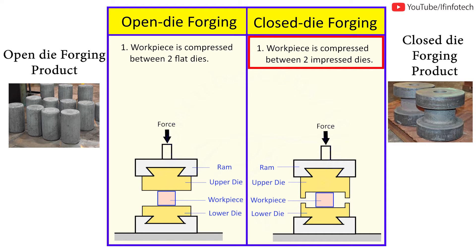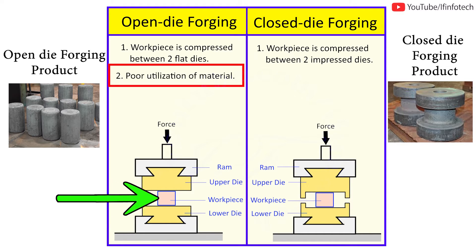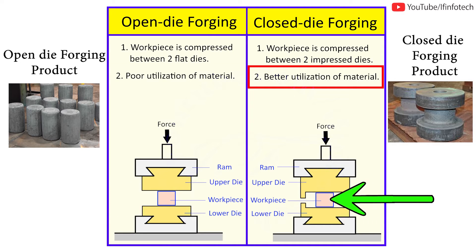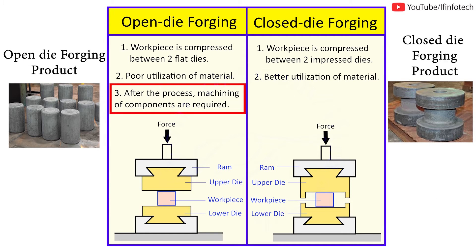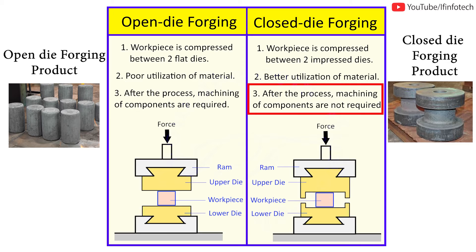During open die forging, there is poor utilization of material, but in closed die forging, there is better utilization of material. After open die forging, machining of components is required, whereas in closed die forging, machining of components is not required.